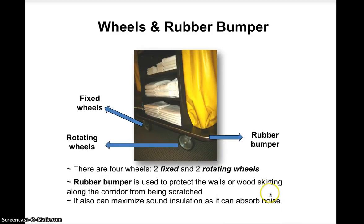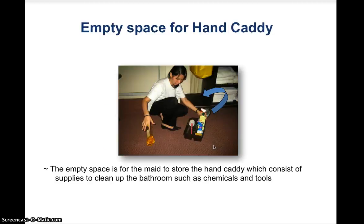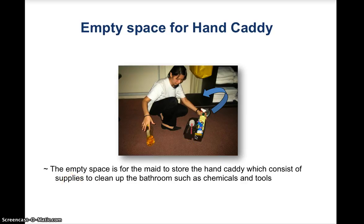There are four wheels — two fixed and two rotating. The rubber bumper protects walls and wood skirting along the corridor from being scratched and also maximizes sound insulation by absorbing noise. Always operate the trolley from the fixed wheel side for easier maneuvering of the rotating wheels. The empty space below the garbage bag is for placing the hand caddy, which holds all supplies for cleaning the bathroom, including chemicals and various cleaning equipment.